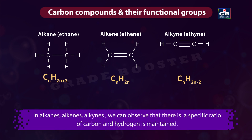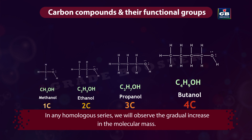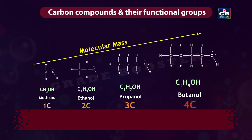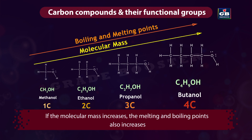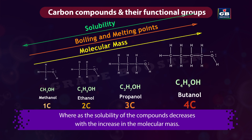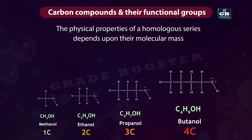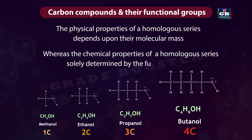In alkanes, alkenes, and alkynes, a specific ratio of carbon and hydrogen is maintained. For example, in alkenes, the pattern CNH2N is observed — if n equals 2, the compound will be C2H4. In any homologous series, there is a gradual increase in molecular mass. As molecular mass increases, melting and boiling points also increase, whereas solubility decreases. The physical properties of a homologous series depend on molecular mass, while the chemical properties are solely determined by the functional group.